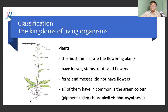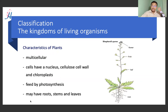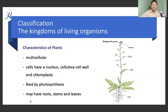Plants have a green pigment called chlorophyll, found in chloroplasts. Chloroplasts are present in plant cells and enable photosynthesis. Plants are also multicellular through their cells. Plant cells have a nucleus and chloroplasts which contain chlorophyll. Chlorophyll is essential for photosynthesis. Plants may have roots, stems, and leaves. Characteristics include flowering, cellulose cell walls, chloroplasts, and the ability to photosynthesize.